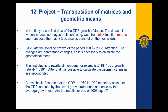In Project 12 we have provided the gross domestic product growth of Japan, and we're supposed to calculate the average growth. For this we first write growth rates and then calculate the geometric mean, because growth rates grow geometrically not linearly. Finally, as a cross-check, we assume GDP in 1980 is 1,000 monetary units, let it grow first by the actual growth rate and then by the average growth rate. If our calculation is correct, in 2008 they should have exactly the same monetary units.